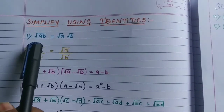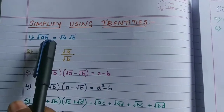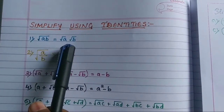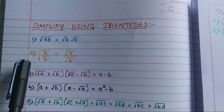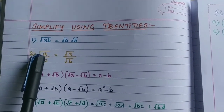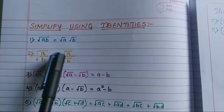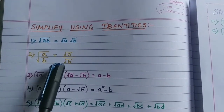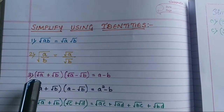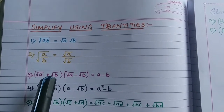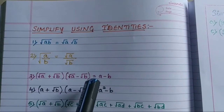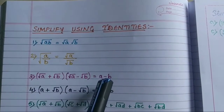The first identity is: root of AB is equal to root of A times root of B. The second one is: root of A divided by B is equal to root A divided by root B. The third one is: root A plus root B, times root A minus root B, will always equal A minus B.